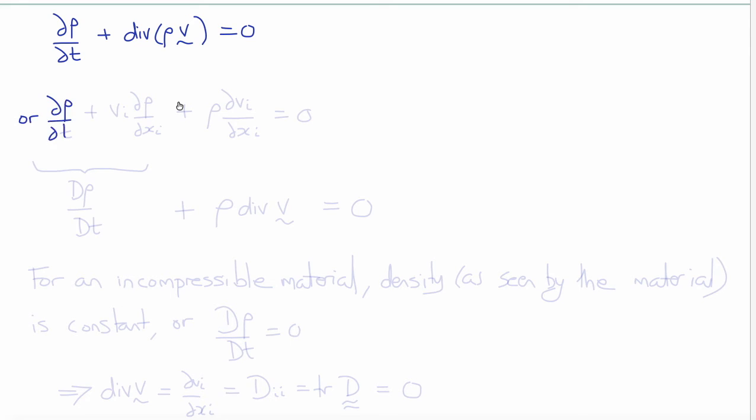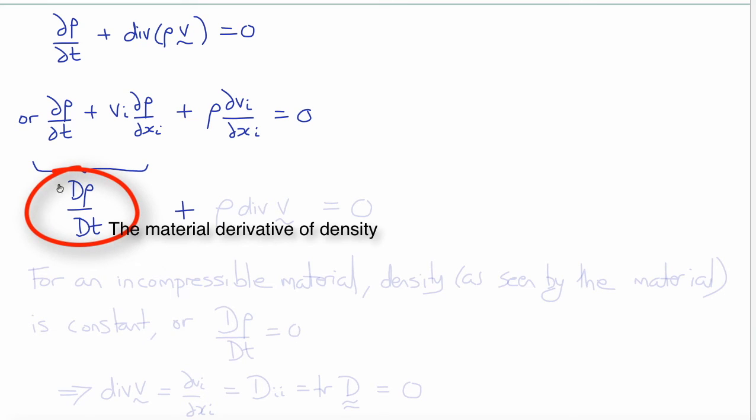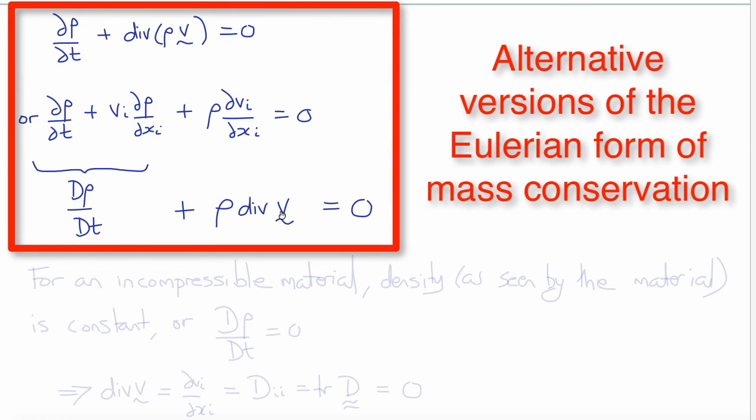Now writing this in index notation, this would be del rho del t plus vi del rho del xi plus rho del vi del xi, because this divergence of a product will result in two terms when we expand the derivative. Notice these first two terms, del rho del t plus vi del rho del xi, are the same as the material derivative capital D rho dt. And the second term del vi del xi is just the divergence of V times rho. So this is the second form of the conservation of mass for an Eulerian description.